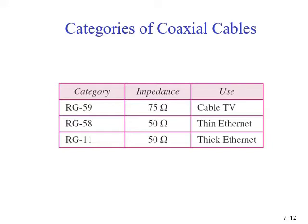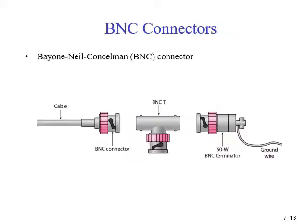Let's talk about the connectors. To connect a coaxial cable to a device, we need coaxial connectors. The most common type of connector used today is the BNC connector. As you can see on the screen, these are the BNC connectors, which have this slider. This is called the T-type BNC connector. You connect them, slide them, and need to twist them to connect.